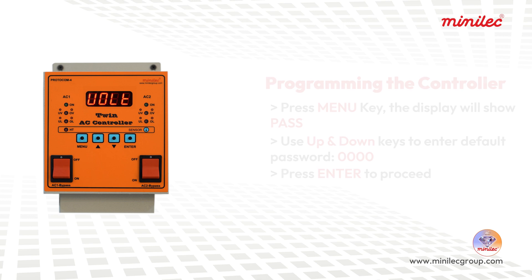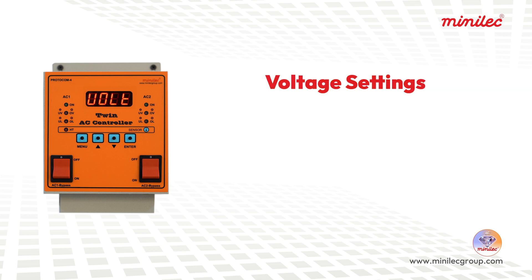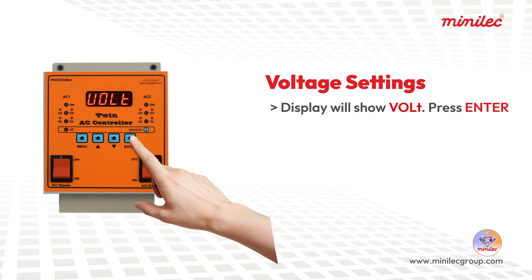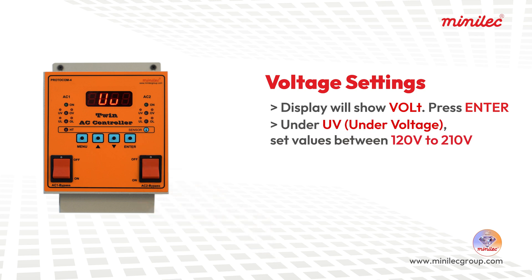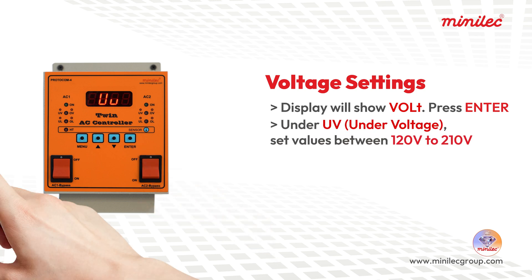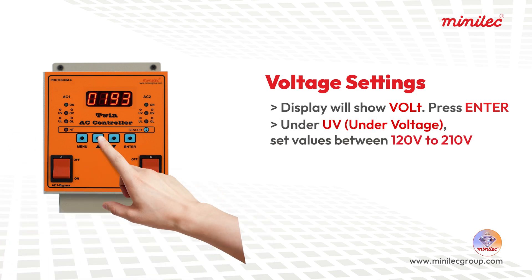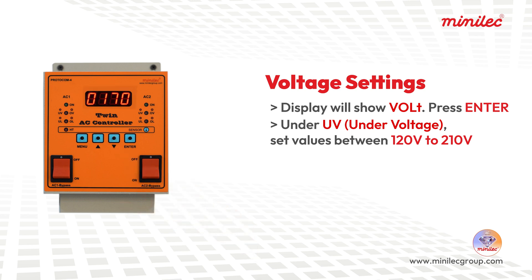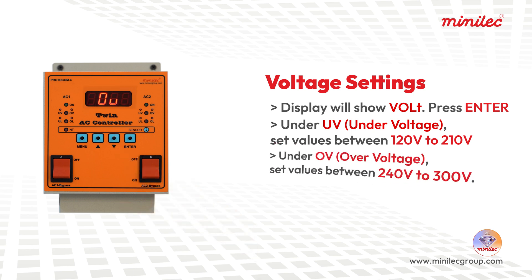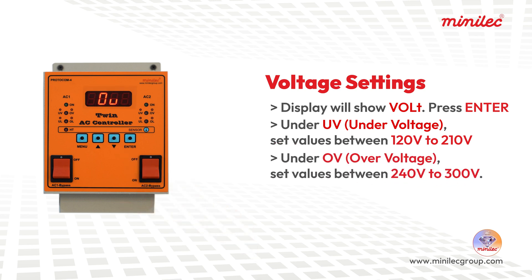Voltage settings: When the display shows VOLT, press ENTER. Under UV (under-voltage), set values between 120V to 220V. Under OV (over-voltage), set values between 240V to 300V.